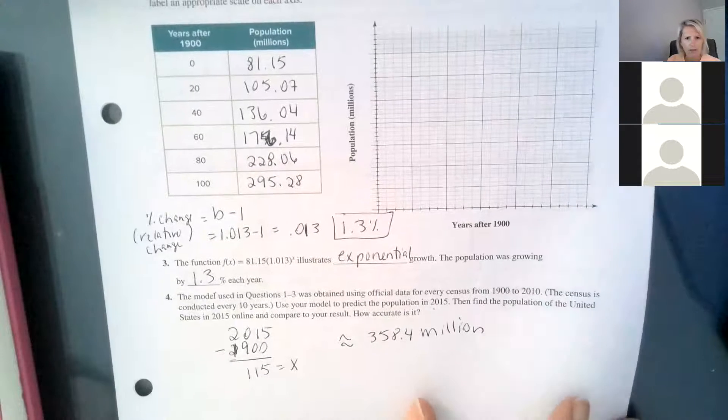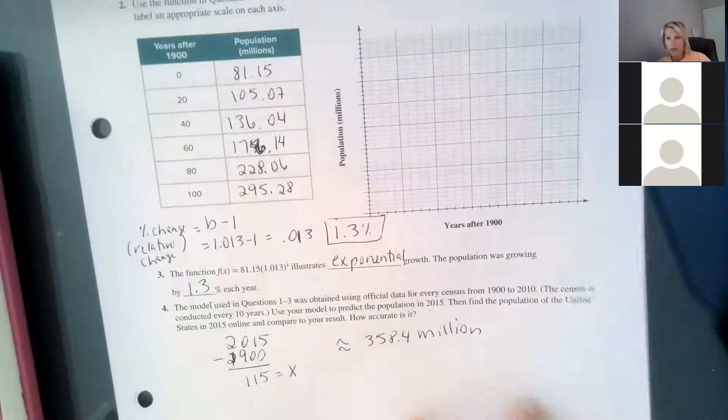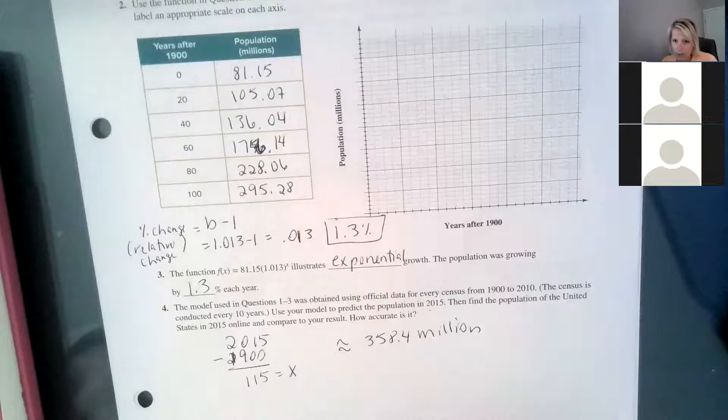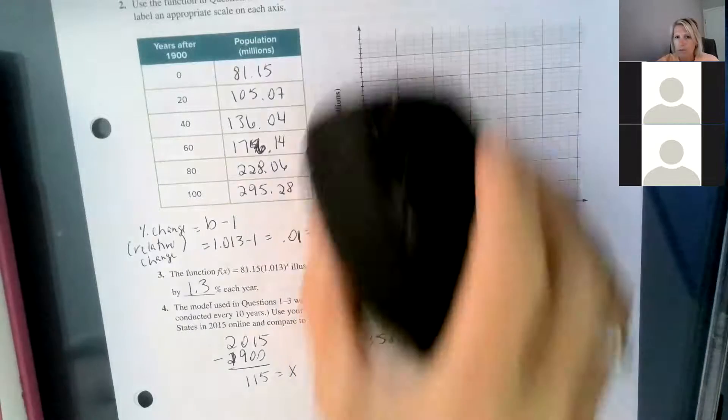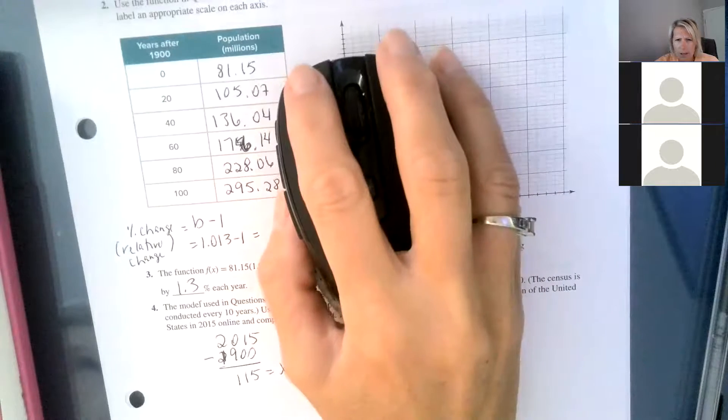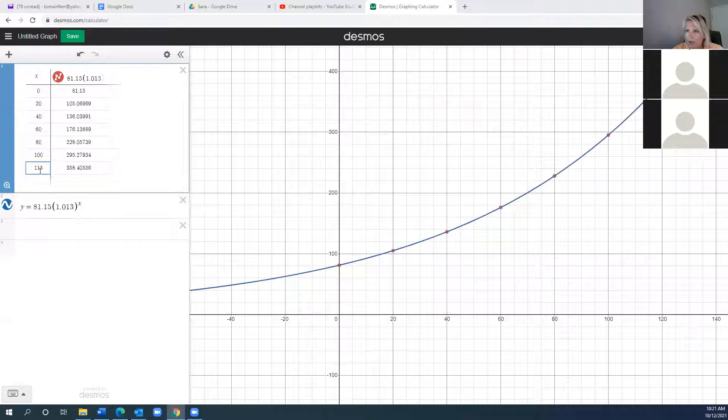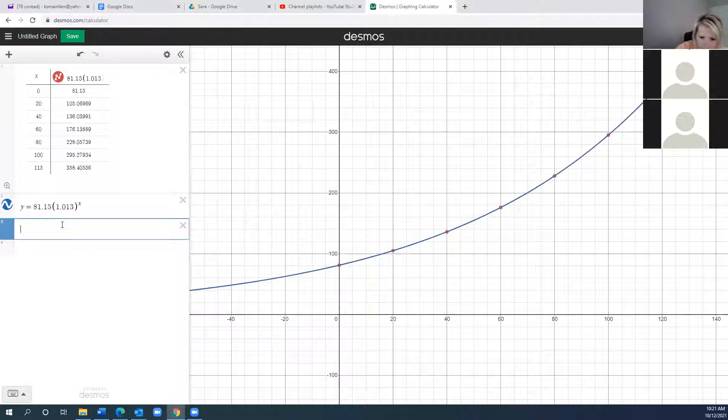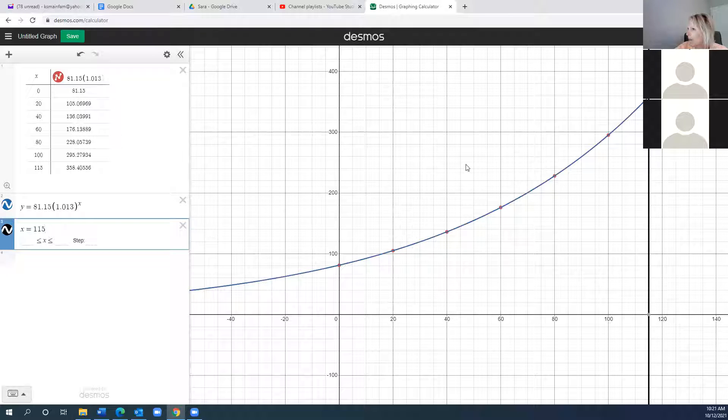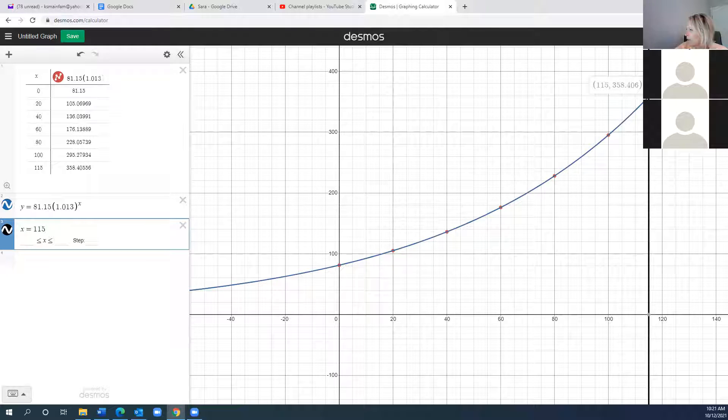So you can do that with your table. You can do it with your mouse scrolling on your graph. These are lots of different ways. So I just made a new row here in my table. That's one way. You could also say when x equals 115, and then it gives you the intersection over here. And it looks like y is 358, just like we thought.